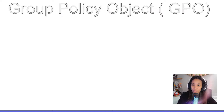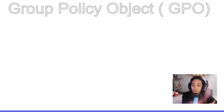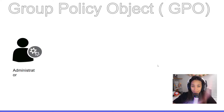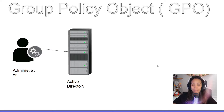Just a refresher before we move on to doing labs. We usually use the term GPO at work, and it stands for Group Policy Object. A GPO is a collection of policies in Active Directory that can be applied to domains and OUs. GPOs are used by admins to manage settings that are applied to users and computers.